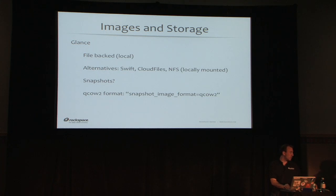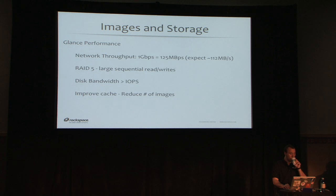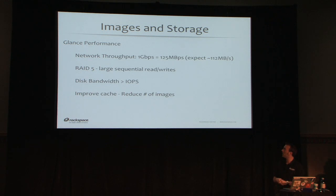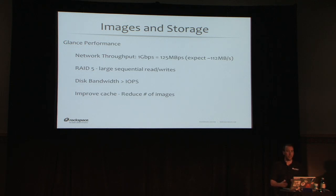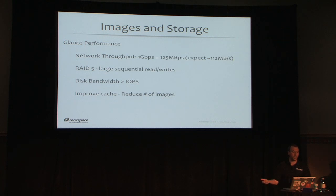My point is: standardize on fewer images and leverage automation and orchestration to build the stack on top. Glance performance — network throughput — becomes really interesting. You could easily consume an entire gigabit just trying to copy an image, especially a very large one. If glance is sharing resources on your controller, you could consume your entire network with a single image copy that happens every time an instance boots.